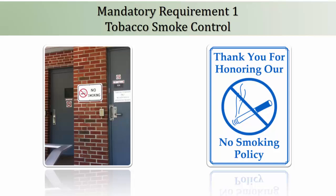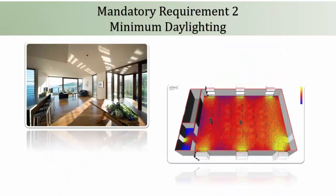The next mandatory requirement is minimum daylighting. This talks about the minimum daylighting through natural lighting sources in regularly occupied spaces such as living room, bedroom, study room, kitchen, etc. There are two techniques for compliance with this requirement: first is calculation, and second is software simulation. To meet this requirement using calculation, minimum 50% of the regularly occupied spaces for every dwelling unit should achieve the minimum glazing factor.